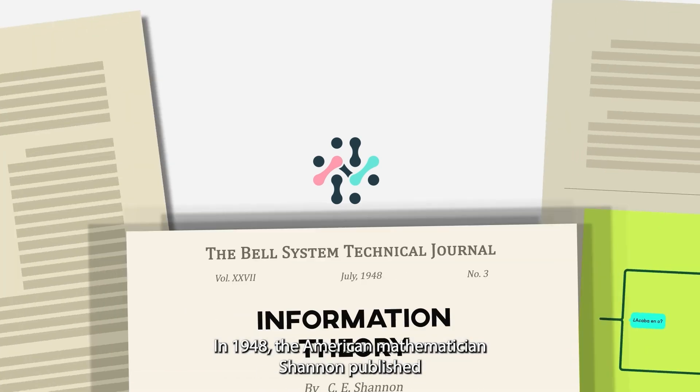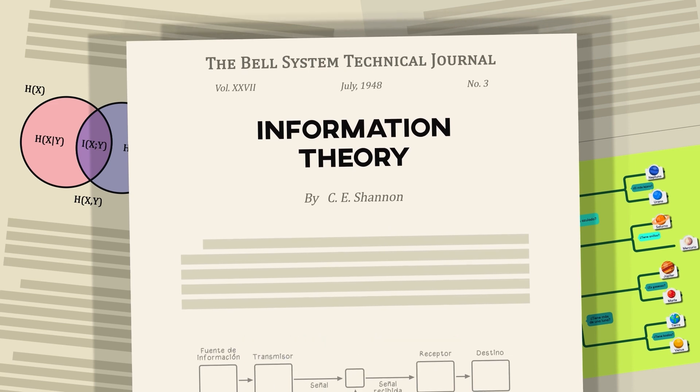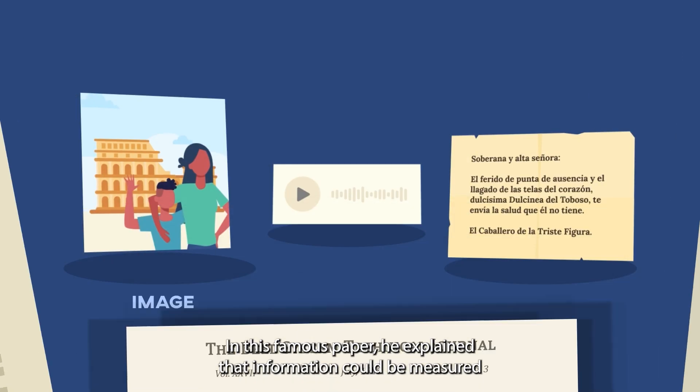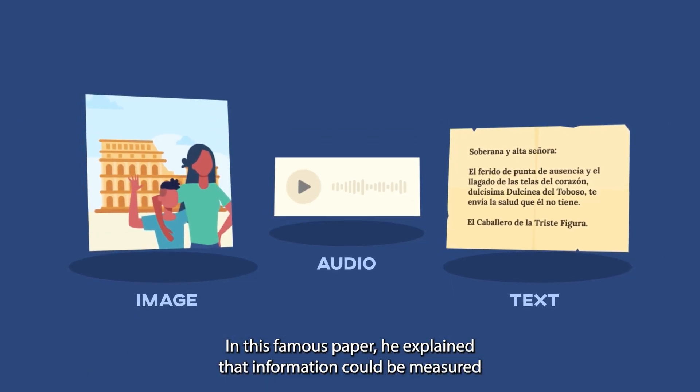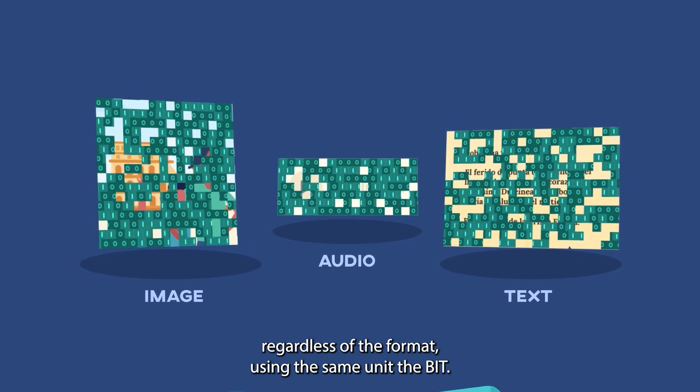In 1948, the American mathematician Shannon published the article that set the ground for information theory. In this famous paper, he explained that information could be measured regardless of the format using the same unit, the bit.